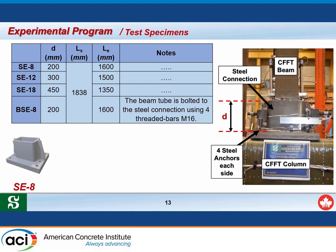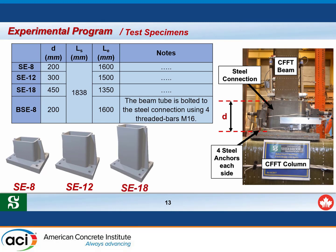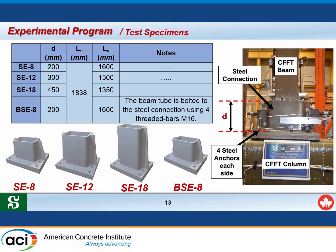The difference between the first three specimens is the embedment depth of the CFFT beam into the steel connection. The steel connection consists of an HSS section welded to a steel plate and supported by two stiffeners. Specimens SE8, SE12, and SE18 differ in the height of the HSS section — that is, the embedment length of the CFFT beam into the steel connection. The fourth connection, BSE, has the same 200 mm depth as SE8, but includes four transverse anchors that pass through both the steel connection and the CFFT beam.